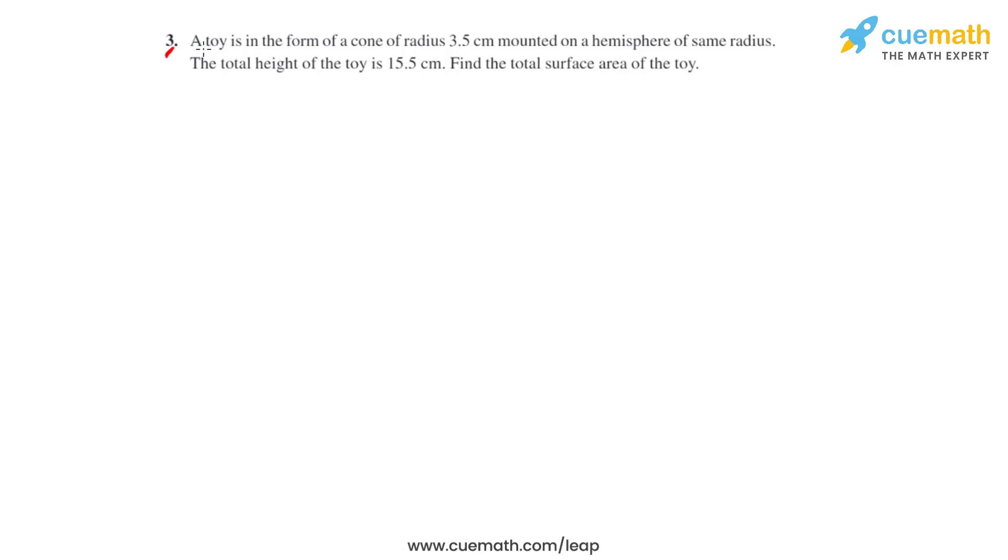Question number three of this exercise says that a toy is in the form of a cone of radius 3.5 centimeters which is mounted on a hemisphere of the same radius. The total height of the toy is 15.5 centimeters. We have to find the total surface area of the toy.